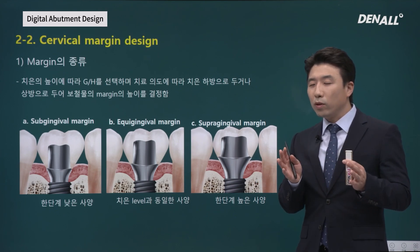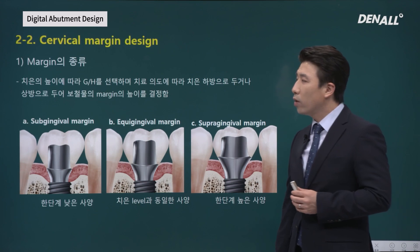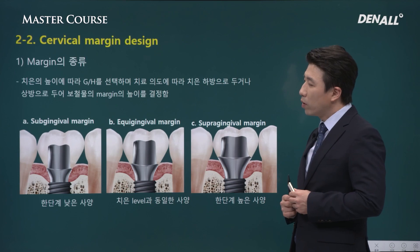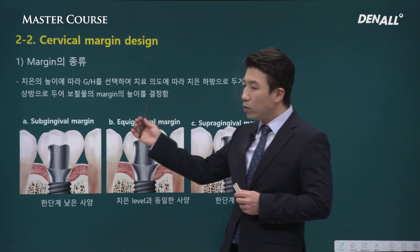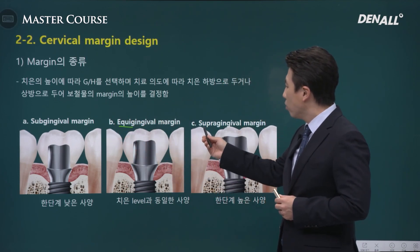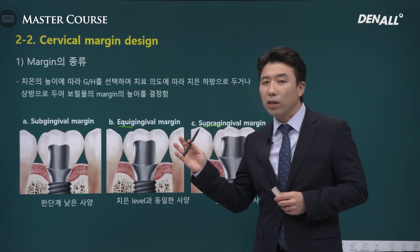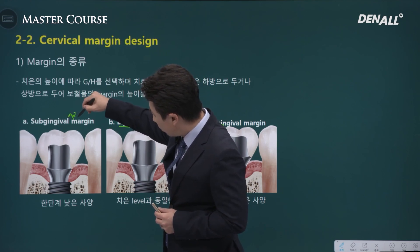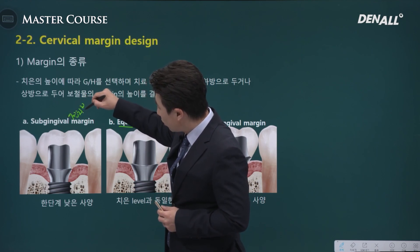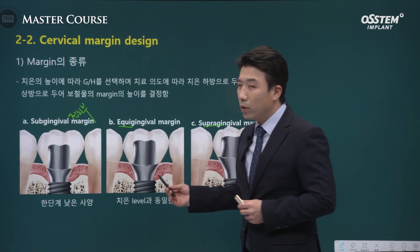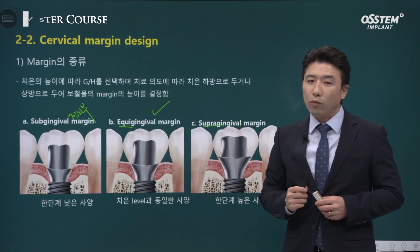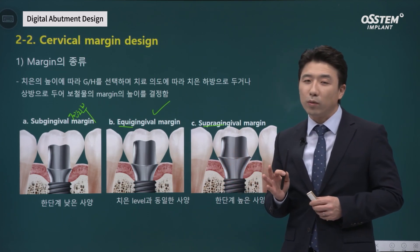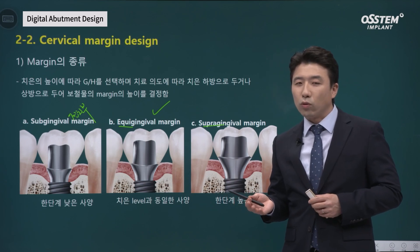We adjust the gingiva when we provide the abutment, and the marginal position is very important. Whether it is subgingival, equigingival, or supragingival, we can make choices. In the case of the anterior area, it is subgingival margin. In most cases, it is going to be equigingival margin. There are areas where a subgingival margin is unnecessary, such as the molar region or premolar region where aesthetics are not as important.